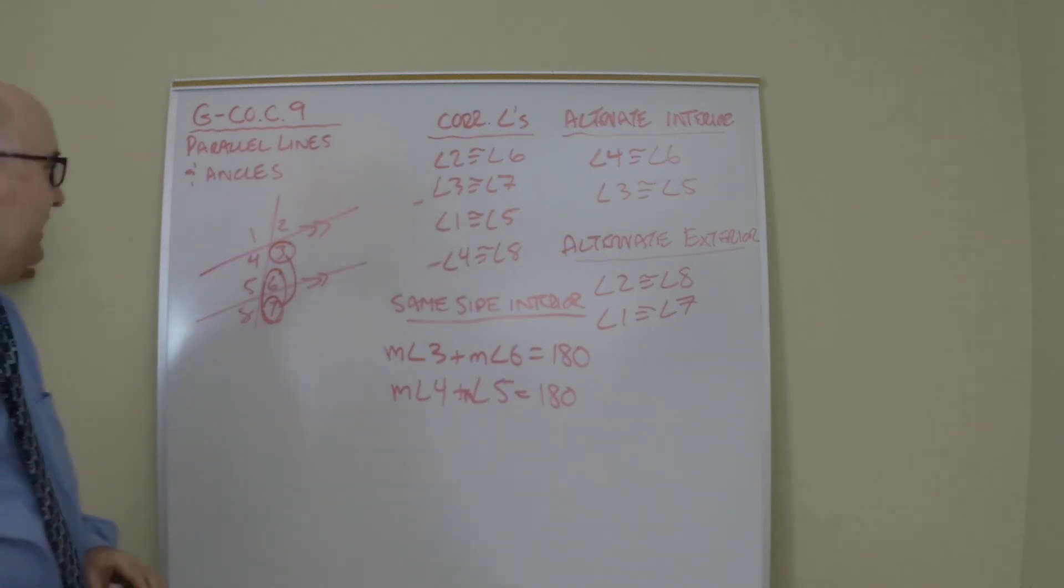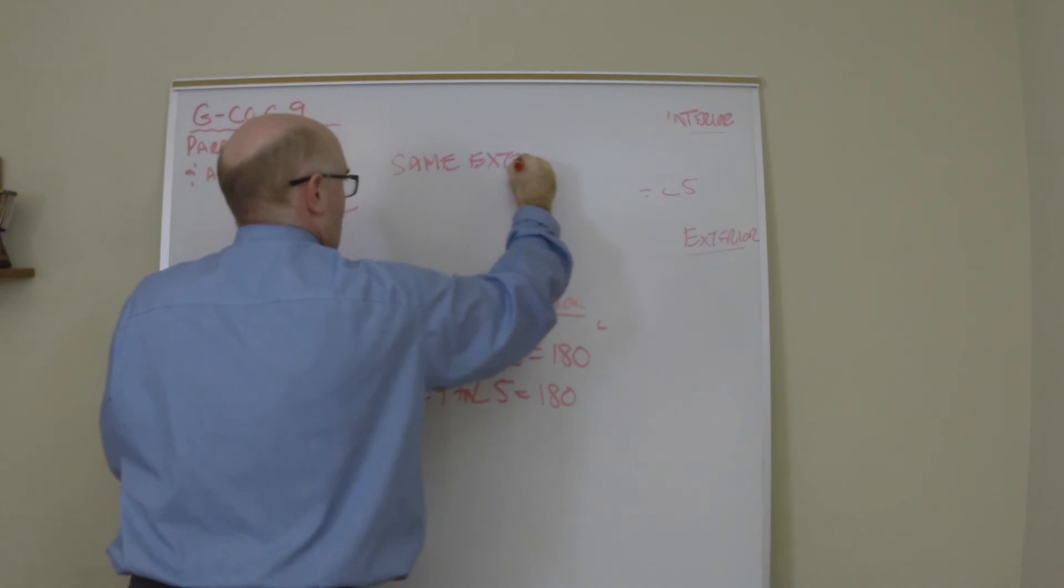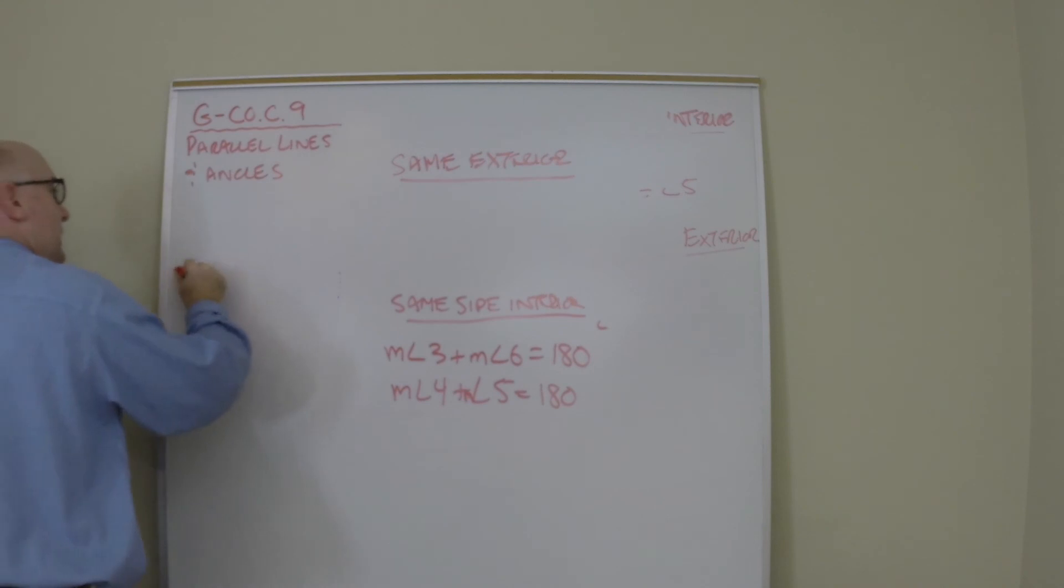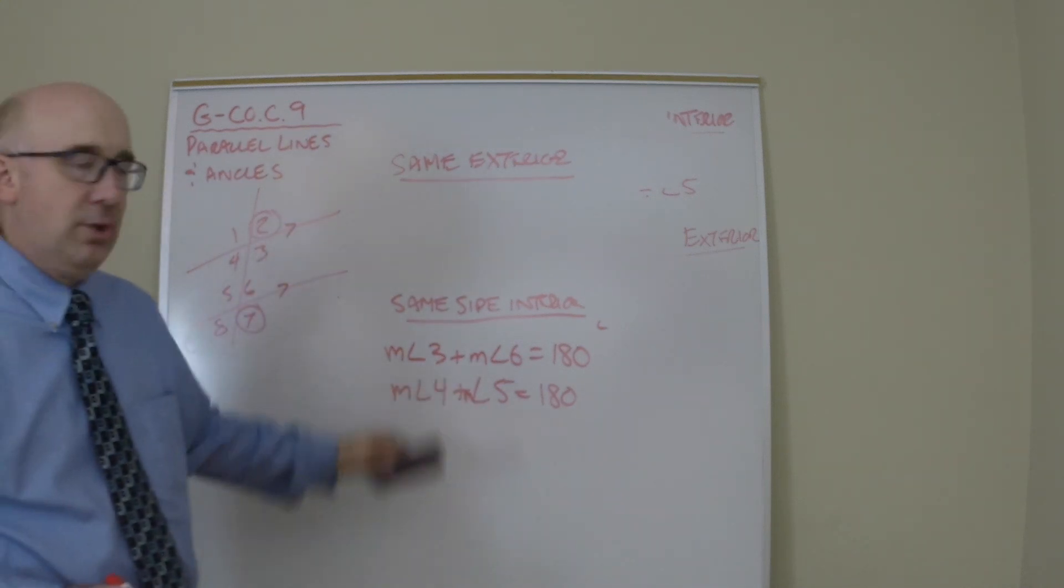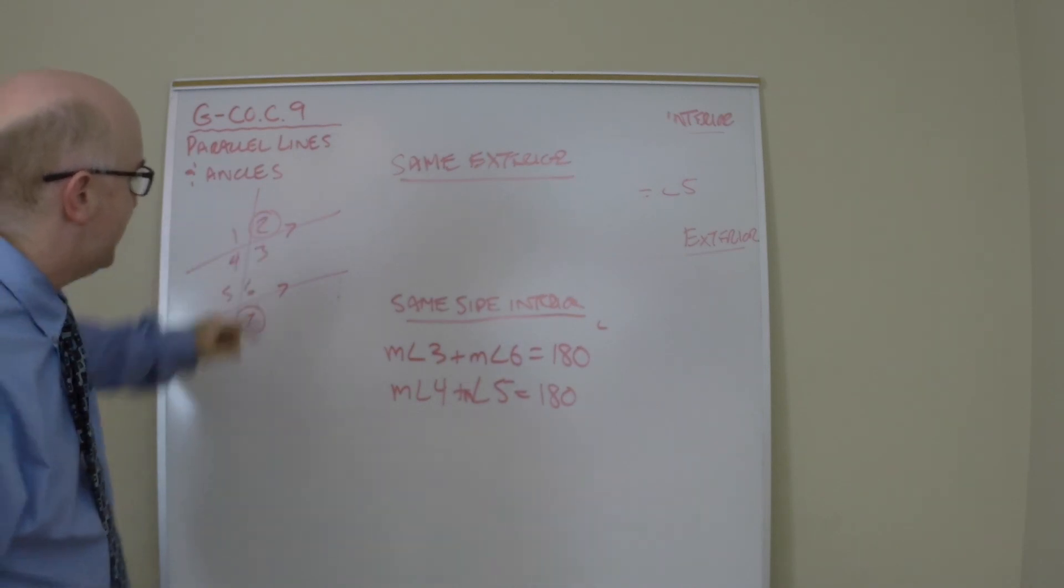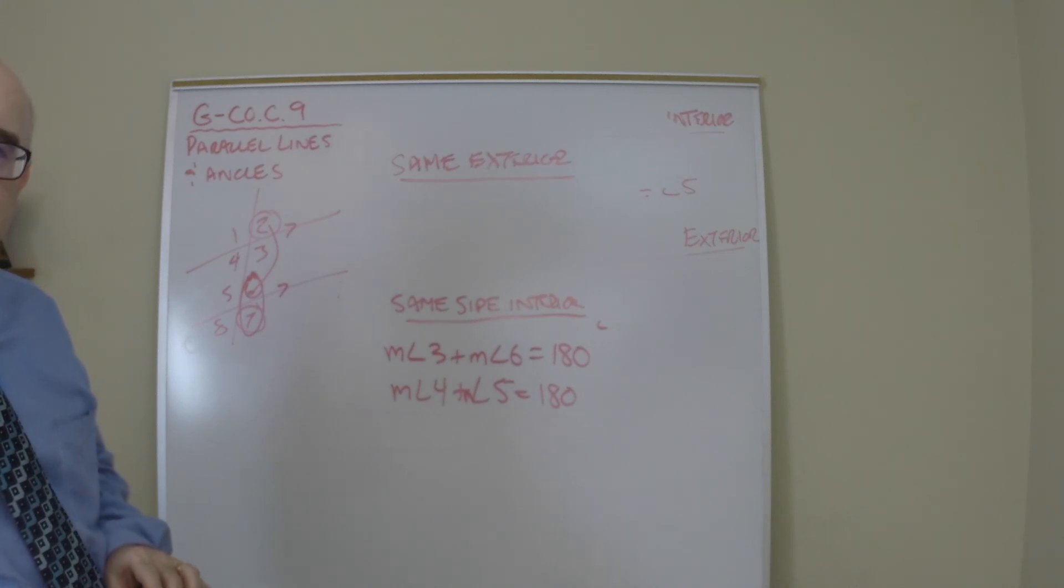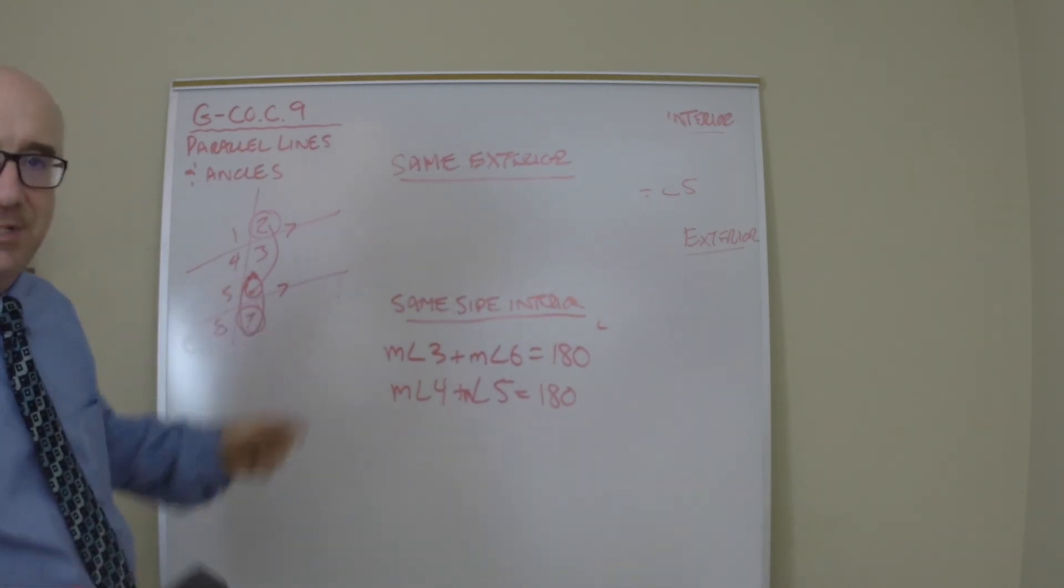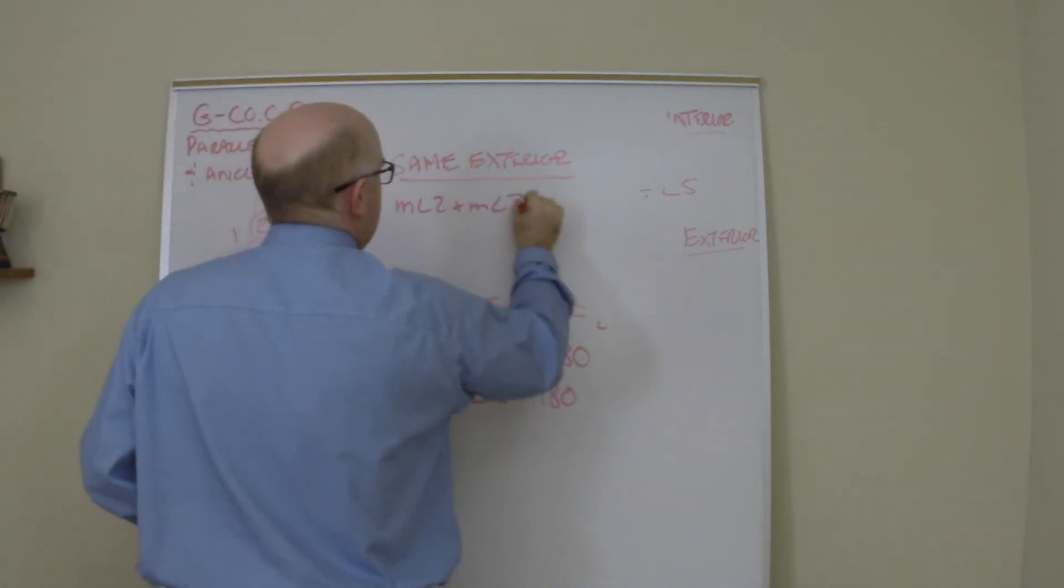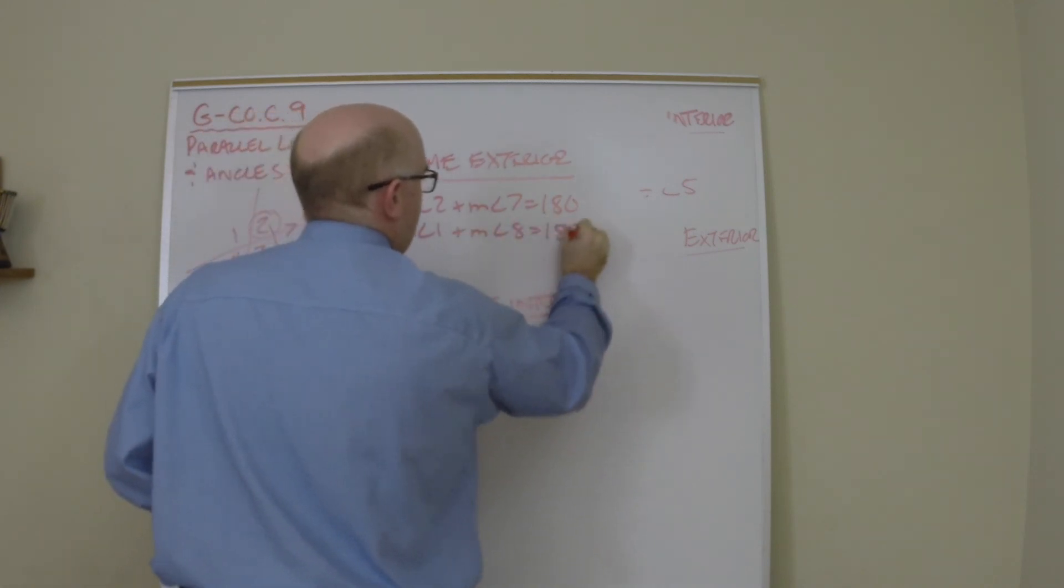The final set is what you would expect—we're missing same side exterior. That's the group that are on the same side of the transversal, like angle 7 and angle 2. They're on the same side but on the exterior. The logic is actually identical to what I just did. I would use angle 6 and angle 7 equal 180, then use angle 2 and angle 6 are equal because they are corresponding angles with parallel lines. Therefore, angle 2 and angle 7 add to 180. The last relationship: angle 2 and angle 7 add to 180, and also angle 1 and angle 8 add to 180—they are supplements.